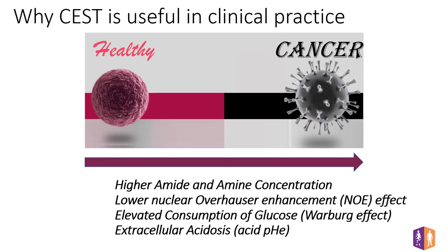What information can CEST provide in the context of tumor imaging? Due to a modification of the protein content, tumor cells have a higher concentration of mobile amide and amine protons, which can be detected in vivo by chemical exchange and attenuation of the water signal, allowing imaging on 3 Tesla clinical MRI scanners. This CEST application is called Amide Proton Transfer, or simply APT.